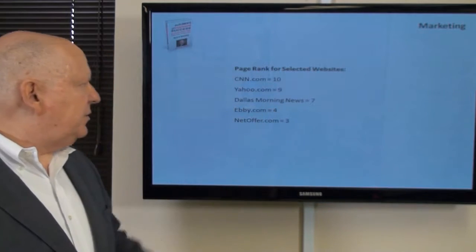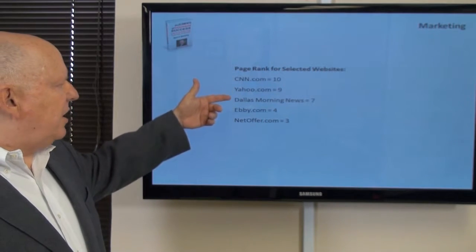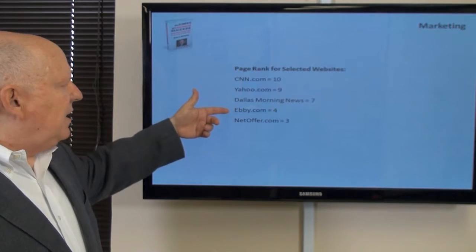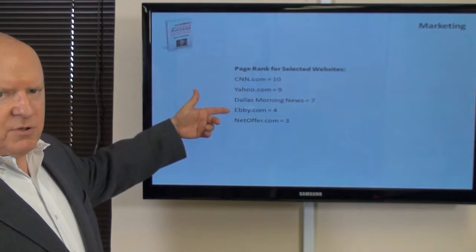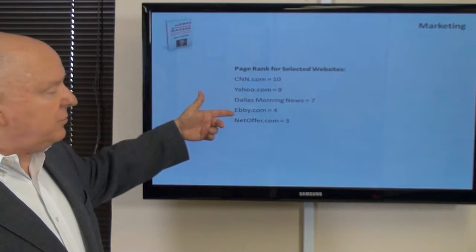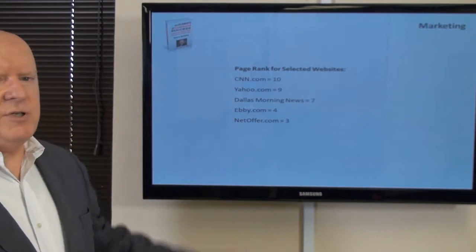Here's a few selected websites. CNN is a 10, Yahoo.com is a 9, the Dallas Morning News is a 7, Ebby Halliday, which is a local realtor here in the North Texas market, a big realtor is a 4, NetOffer is a page rank of 3.